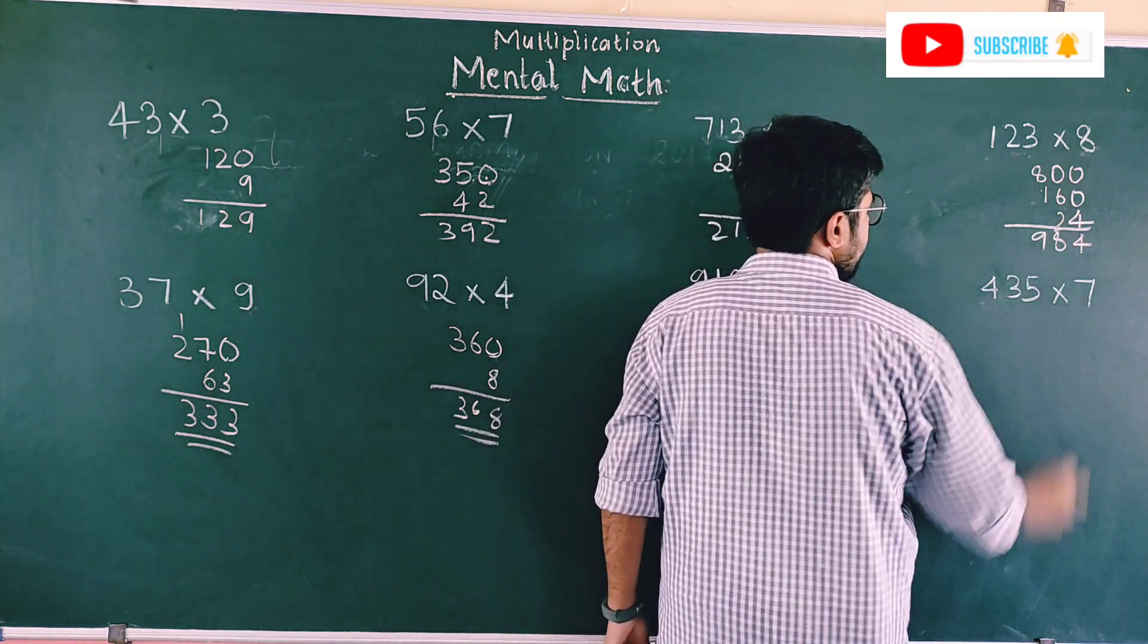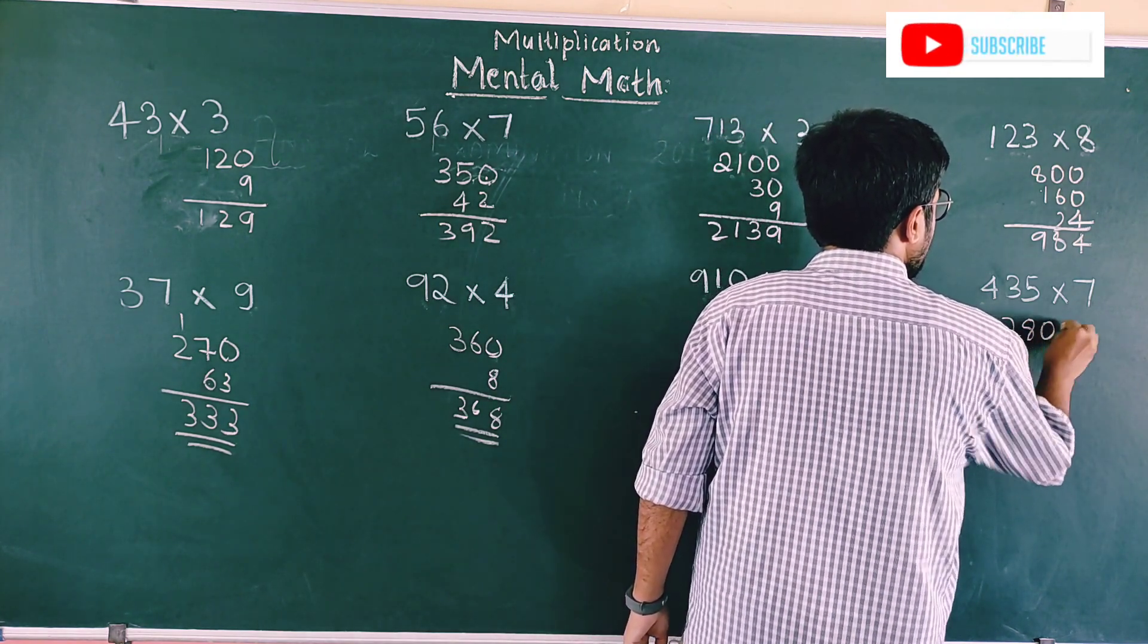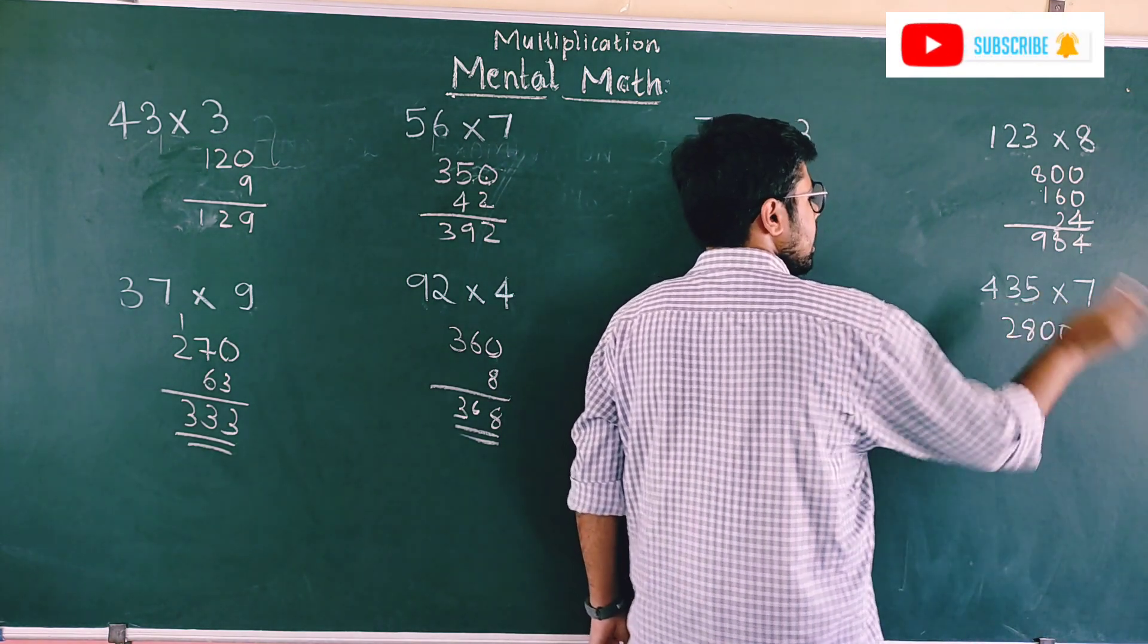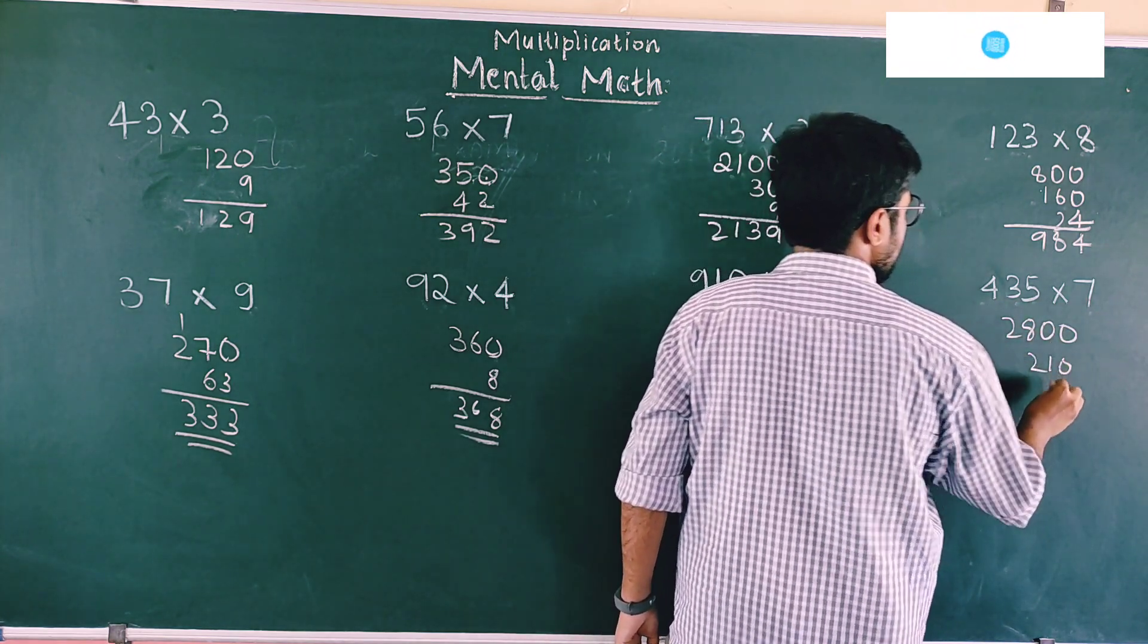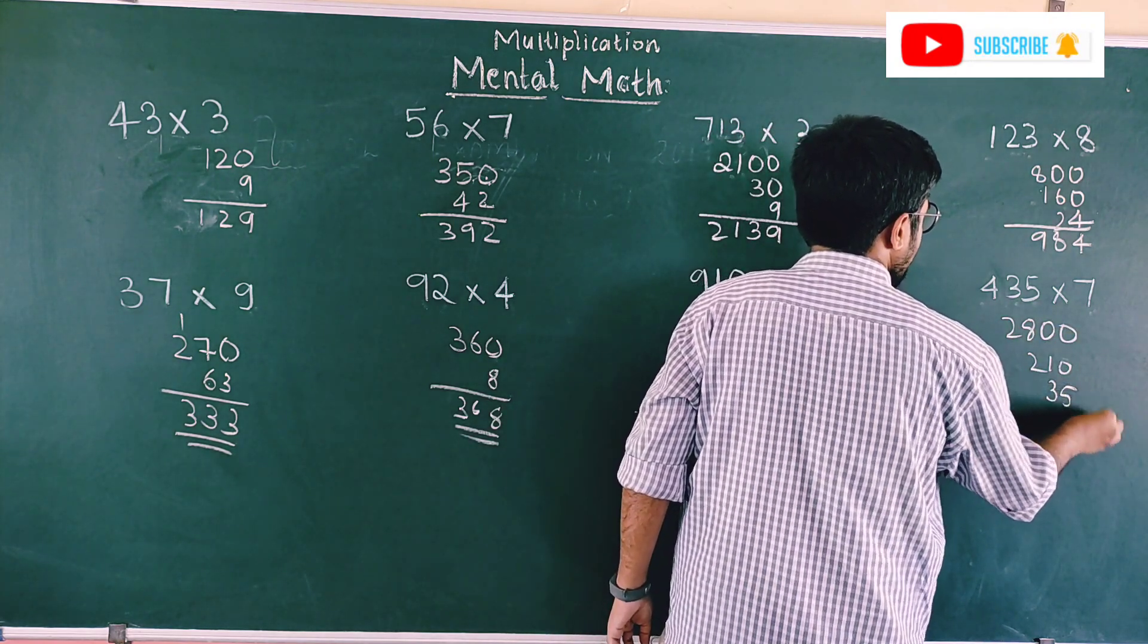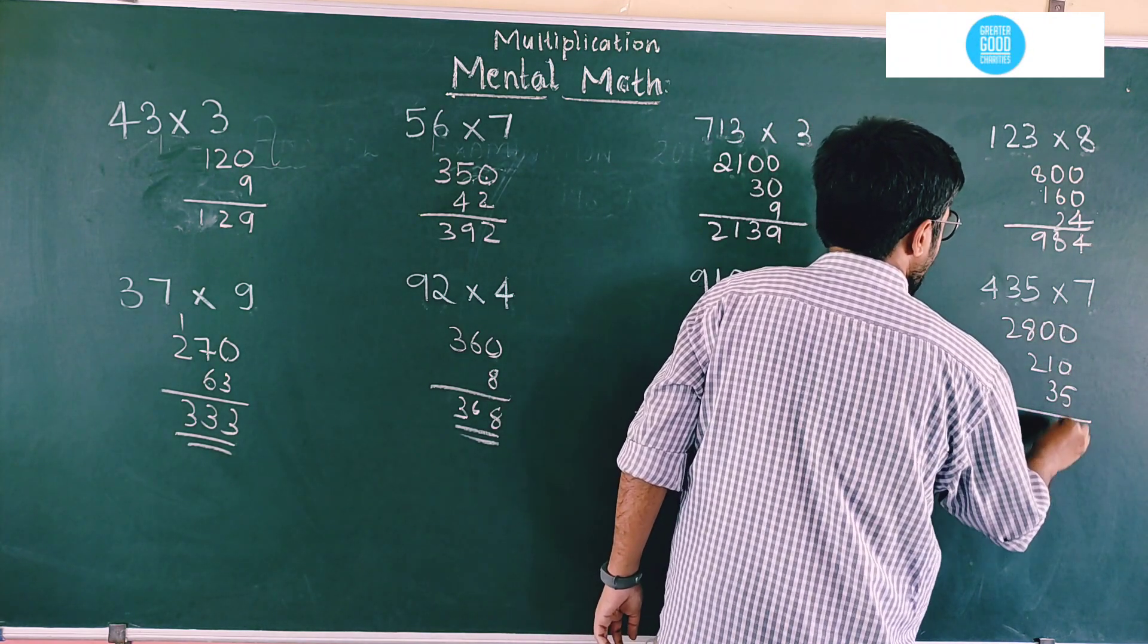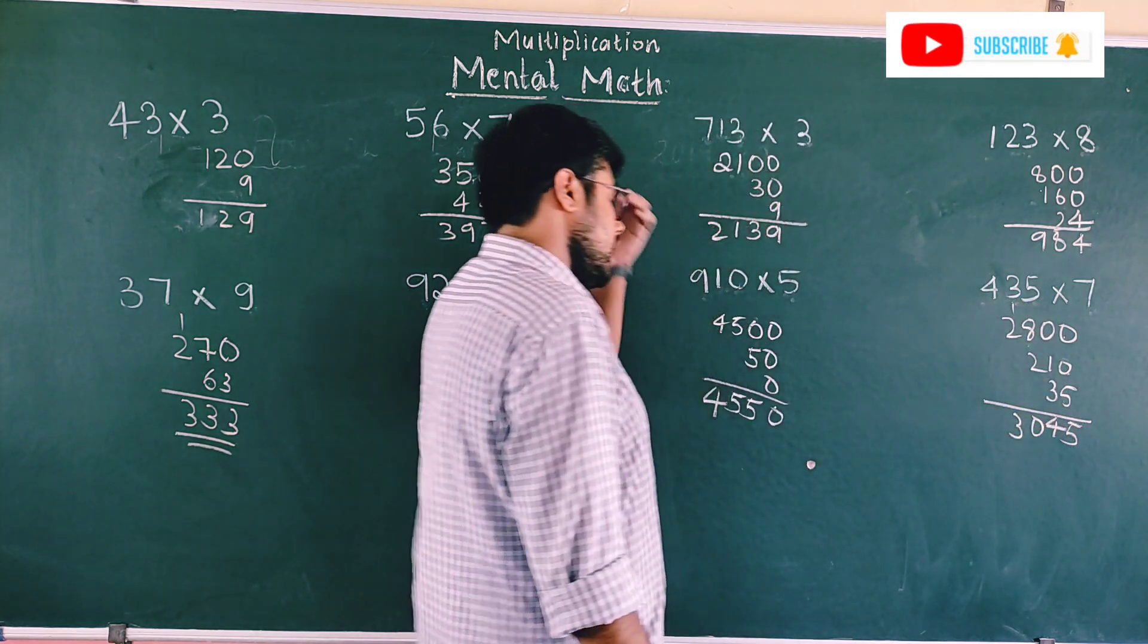Similarly here, 4 times 3 is 28. Put 2 zeros because there are 2 numbers. Then again, 3 times 7 is 21. Put 1 zero after 21 because 1 number is after 3. Next, 7 times 5 is 35. Just write 35 as it is. Next, add: 3045 would be the right answer.